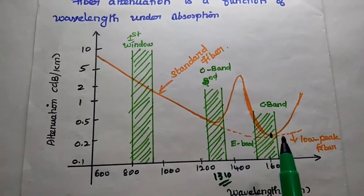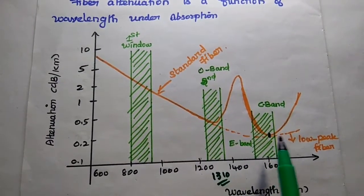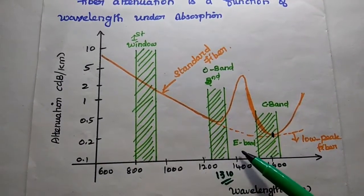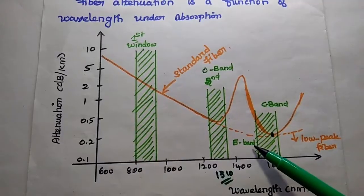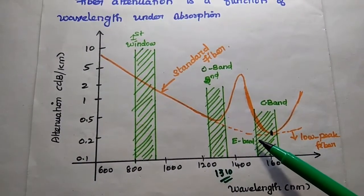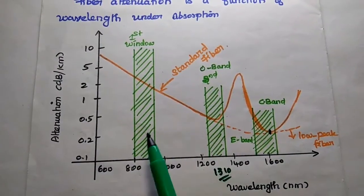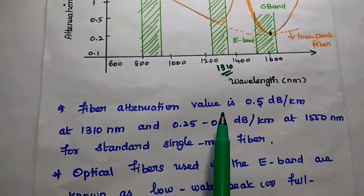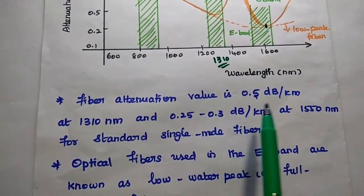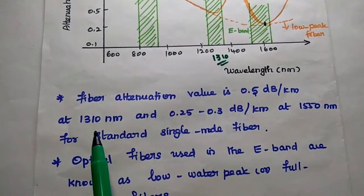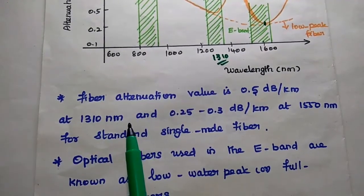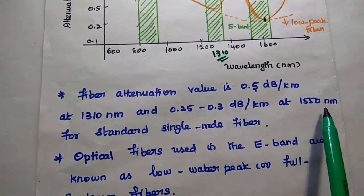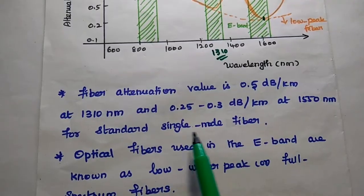The E band range is also significant — the optical fibers used in the E band range are known as low water peak fibers or full spectrum fibers. This is a very important concept in attenuation as a function of wavelength. The fiber attenuation value is 0.5 dB per kilometer at 1310 nanometers and 0.25 to 0.3 dB per kilometer at 1550 nanometers for standard single mode fiber.